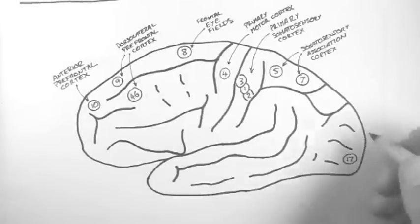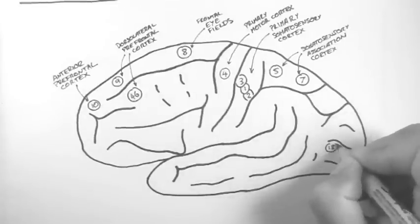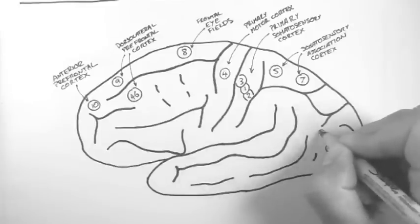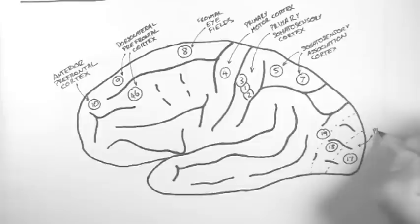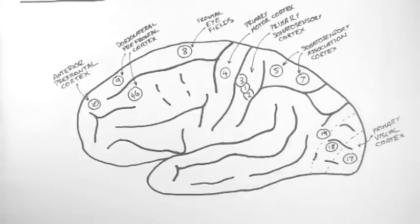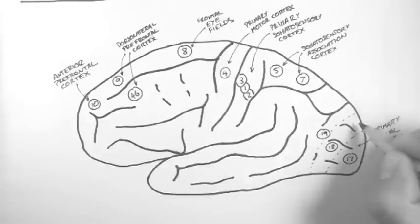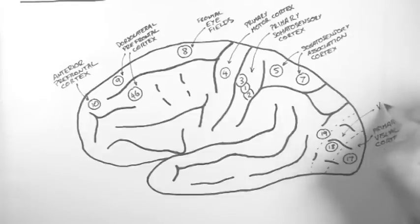Up the back here, we have Brodman areas 17, 18 and 19. These are in the occipital lobe. 17 is the primary visual cortex, where we get input from the eyes. We often call this V1. Then 18 and 19 are V2 and V3 respectively. They're more association cortices for the visual system.